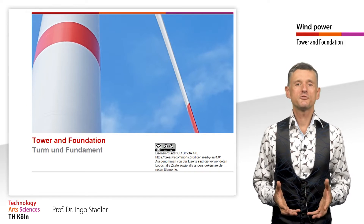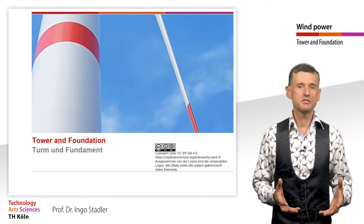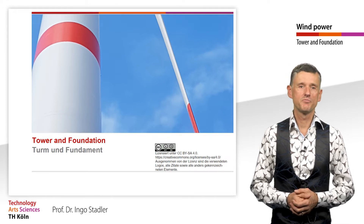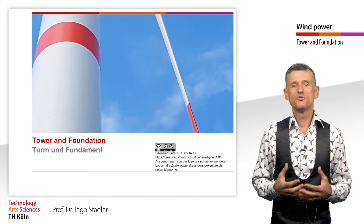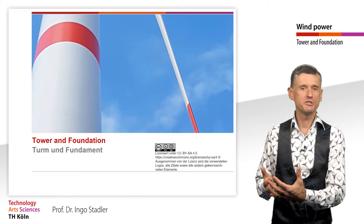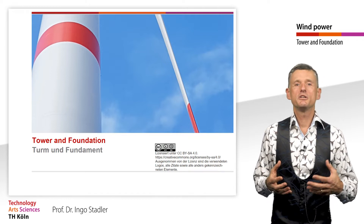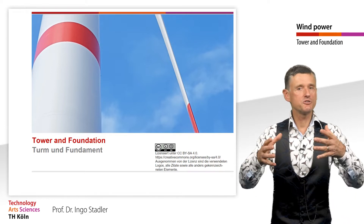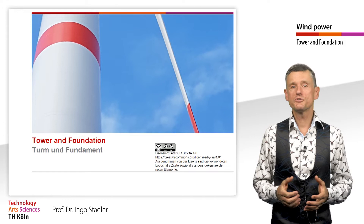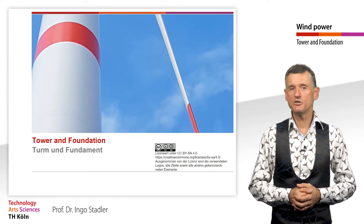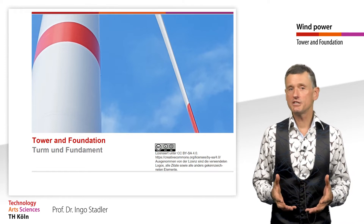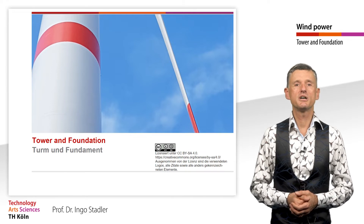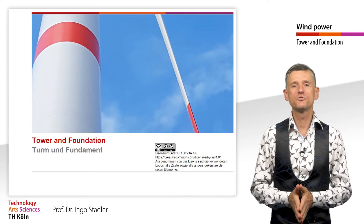The construction mass and thus the costs could be considerably reduced with flexible towers. It is obvious to combine concrete and tubular steel construction, where the lower part is made of concrete and the steel tube is placed on top. Most recently, the trend towards ever taller towers at onshore locations has increasingly brought the hybrid construction method to the fore.